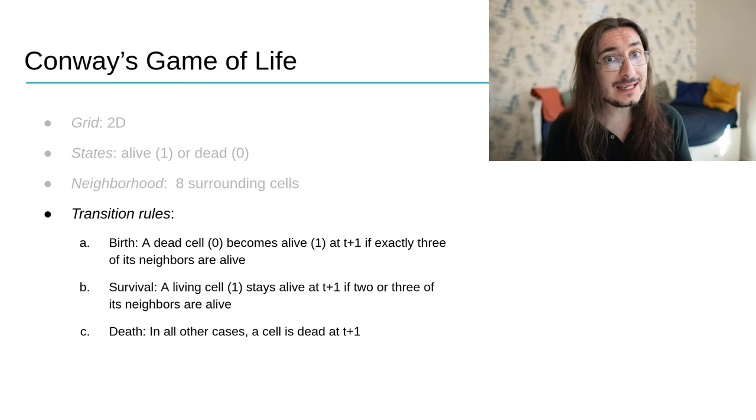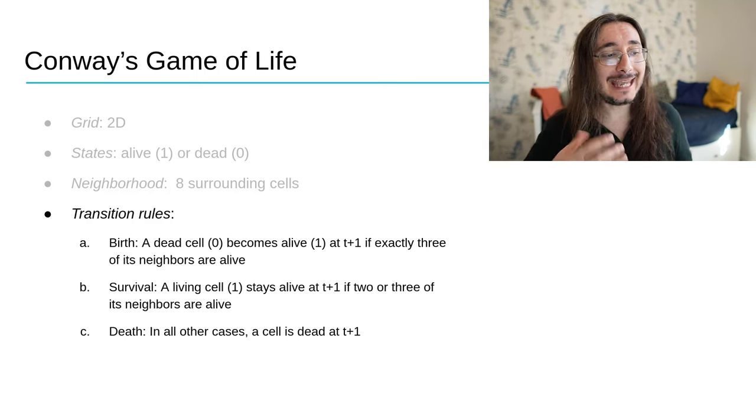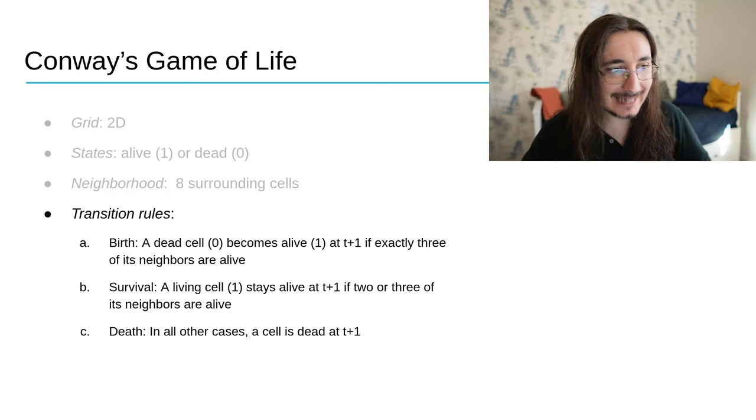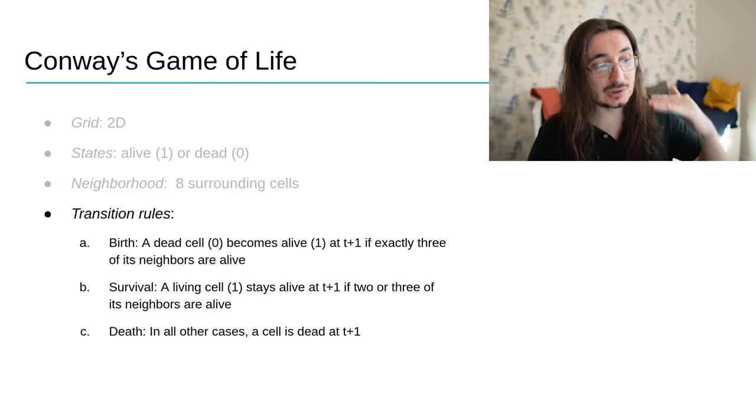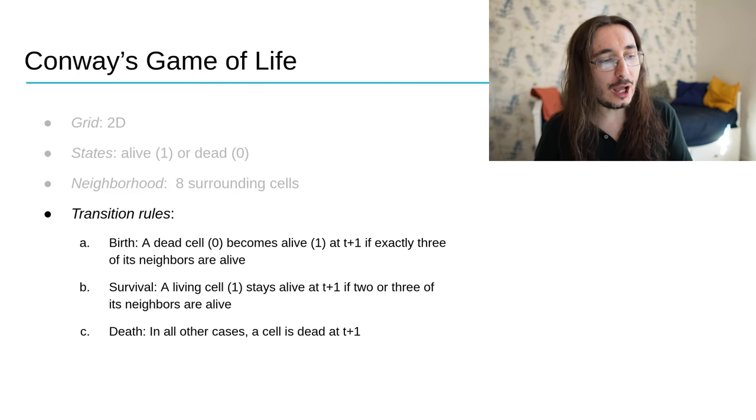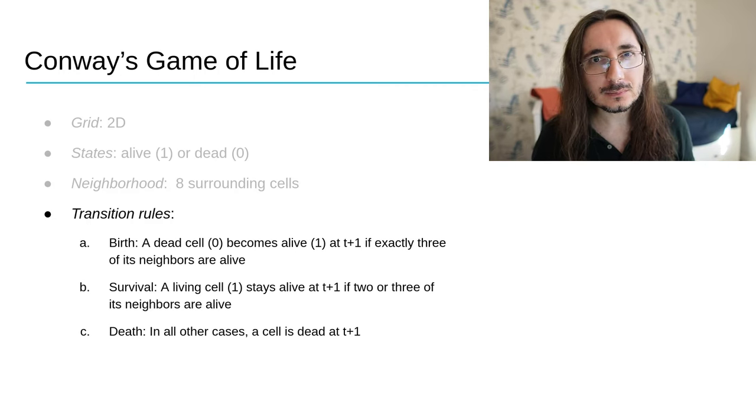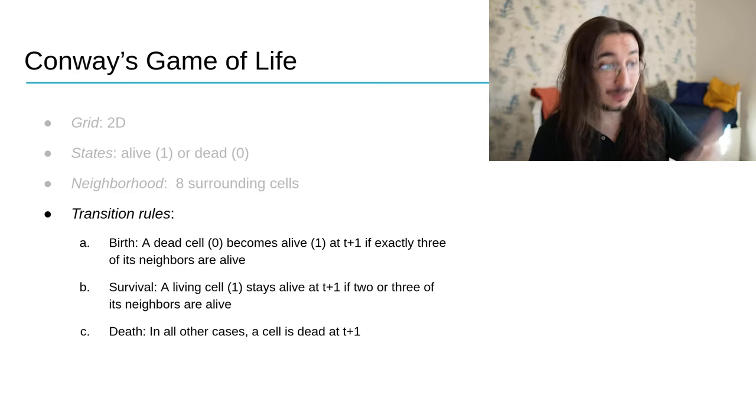Then we have three simple transition rules. Number one, we have the birth. So a dead cell can become alive at T plus one in the next step if exactly three of its neighbors are alive. In order to survive from one step to the next, a living cell has to have two or three of its neighbors alive. And finally, a cell dies in all other situations. As you can see, these are very simple rules, but they create very interesting patterns, as we just saw.